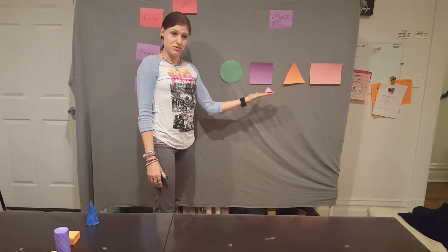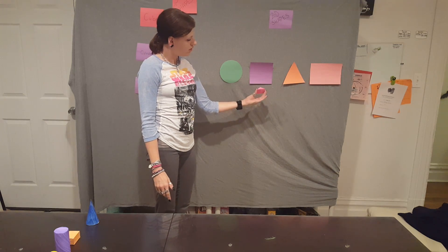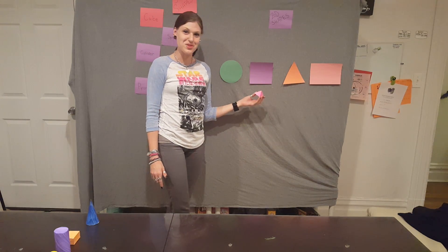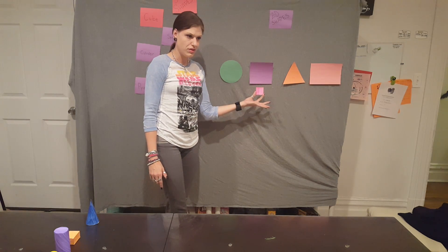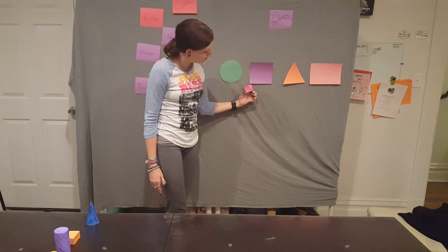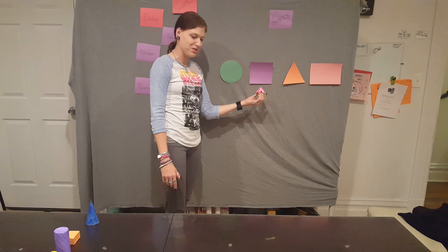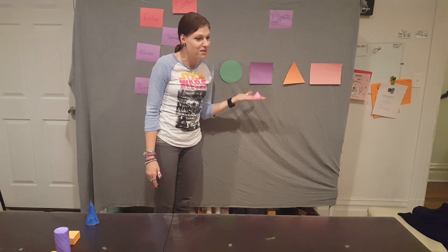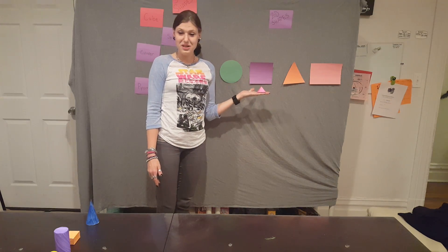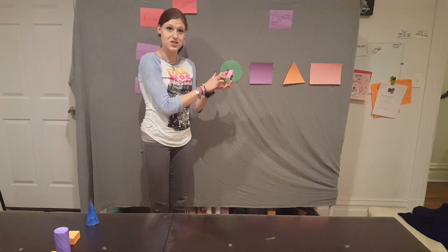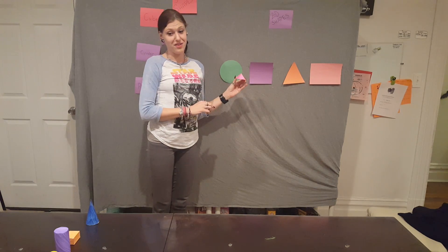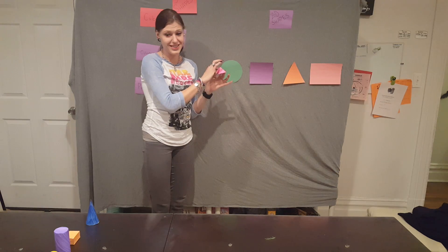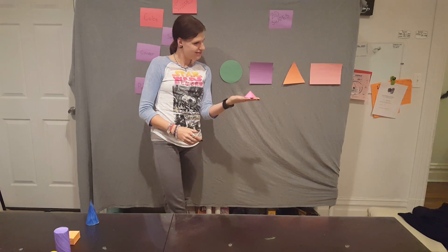Now what two-dimensional shapes do we see here? A square — that's right, good job — and some triangles. How many squares do we see? One, just one. How many triangles? Four, good job! This shape is what we call a pyramid. Say it with me — pyramid! A pyramid is a three-dimensional object that has one square face and four triangular faces. A pyramid has eight edges and five vertices. Can we stack a pyramid? No. Can we roll a pyramid? No.